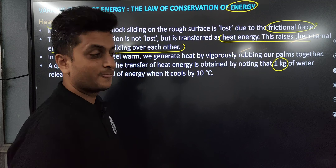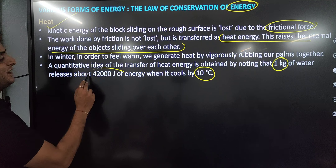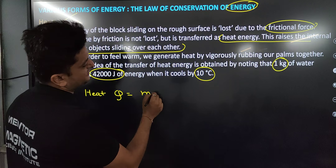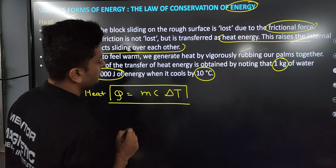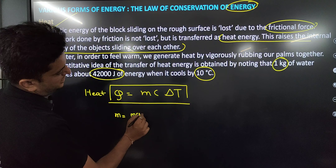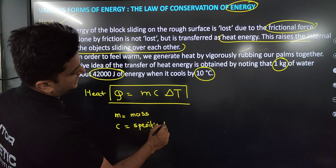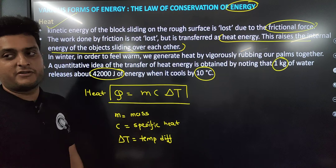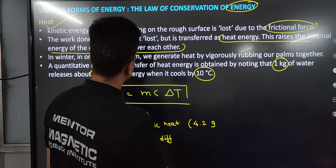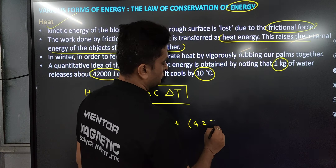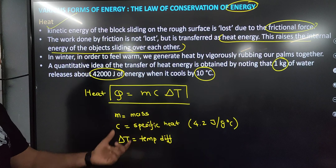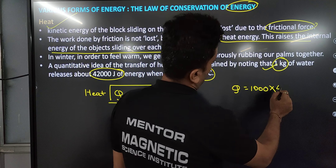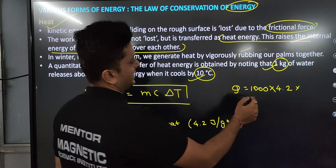Heat has a simple formula: Q = mcΔT, where m is mass, c is specific heat, and ΔT is the temperature difference. For water, the specific heat is 4.2 joule per gram per degree Celsius. Plugging in: 1 kg = 1000 g, specific heat = 4.2, temperature change = 10°C gives Q = 1000 × 4.2 × 10 = 42,000 joules. That is the heat energy released.